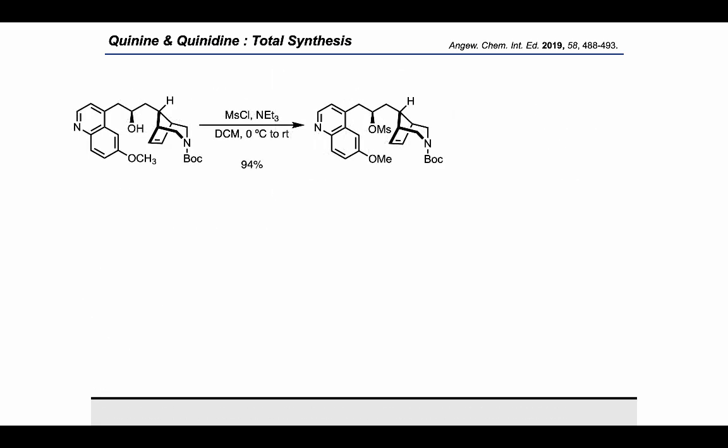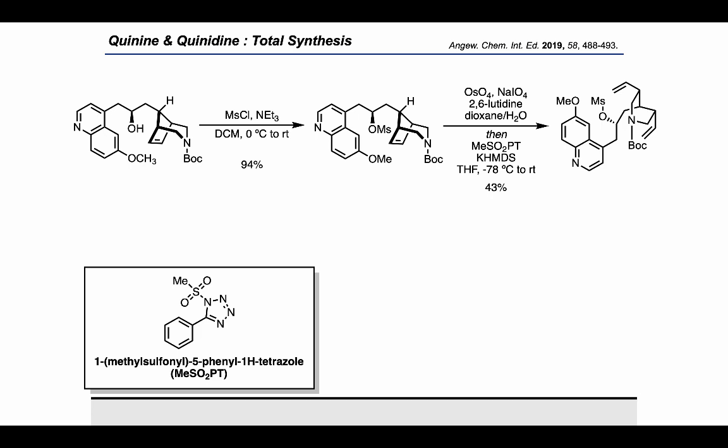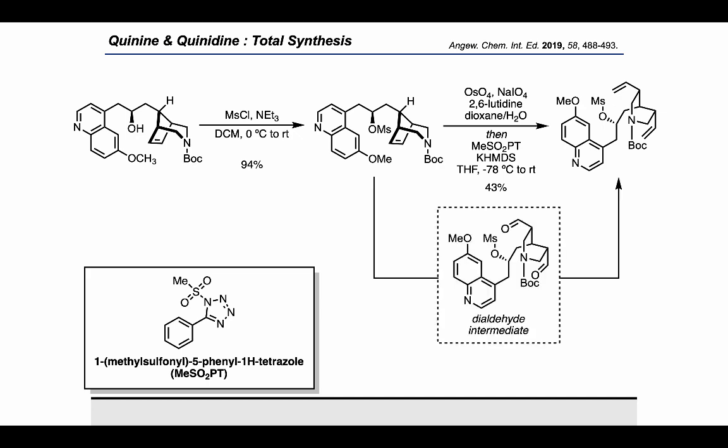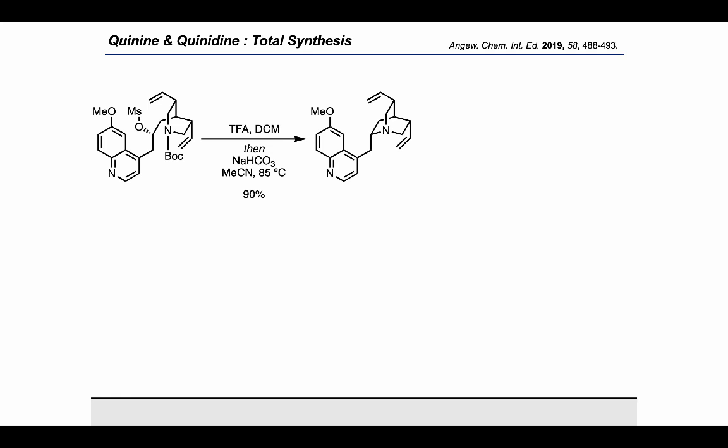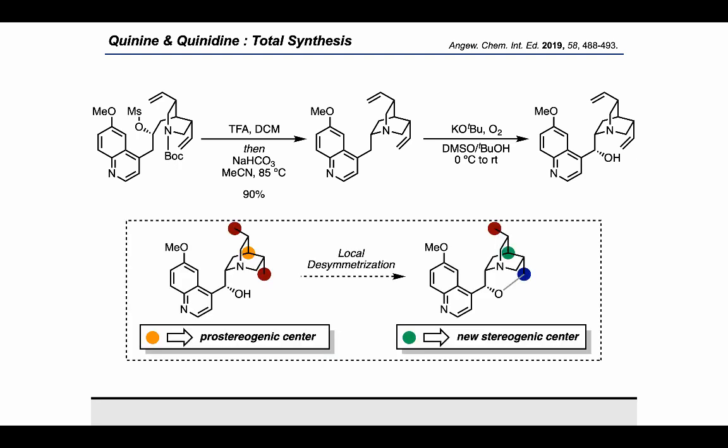Moving on to see how quinidine can be made using similar ideas, let's go back to the secondary alcohol which was enantioenriched by the camphanic ester resolution. In this route, they started by mesylating the secondary alcohol. Then using osmium tetroxide and sodium periodate, followed by Julia-Kocienski conditions, they converted the internal alkene in the starting material into a product bearing two terminal alkenes, going through a dialdehyde intermediate. They were then able to use the same reaction as before to remove the Boc group and close the quinuclidine bicycle.